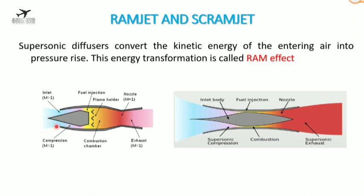The air reaches the combustion chamber where fuel and air are mixed and ignited, then exits through a converging nozzle. The exit Mach number is usually greater than one — that is, the speed is greater than the speed of sound. Mach number is the ratio of the velocity of an object to the velocity of sound. The exhaust gases leave the ramjet engine at higher velocities, around Mach 4 to 5.